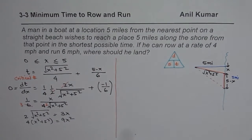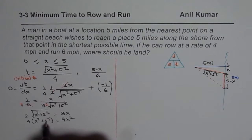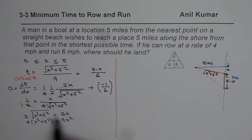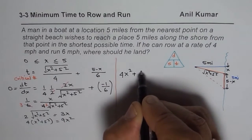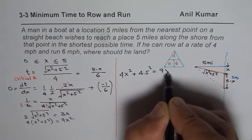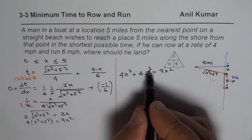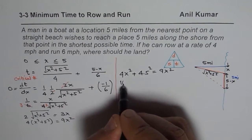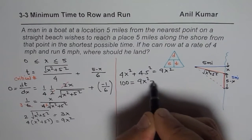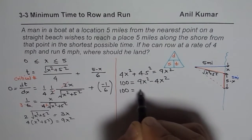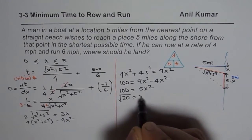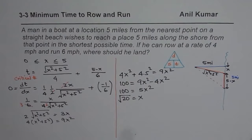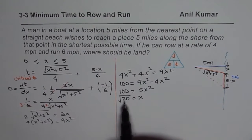Let's simplify further. We have 4x² + 4·25 = 9x², so 4x² + 100 = 9x². Bringing 4x² to the right side: 100 = 9x² − 4x² = 5x². So x² = 20, and therefore x = √20. The critical number is x = √20.